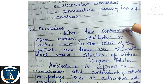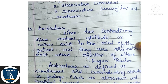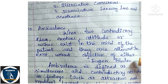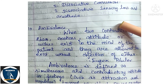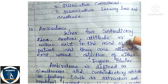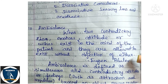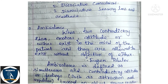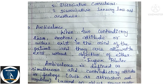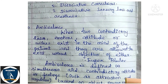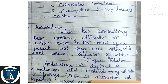Next: Ambivalence. When two contradictory ideas, emotions, attitudes, or wishes exist in the mind of the patient and are allowed to exist without objection of either, it is called ambivalence — as defined by Eugen Bleuler. Ambivalence is also defined as simultaneous and contradictory attitudes or feelings, such as attraction and repulsion, towards an object, person, or action.